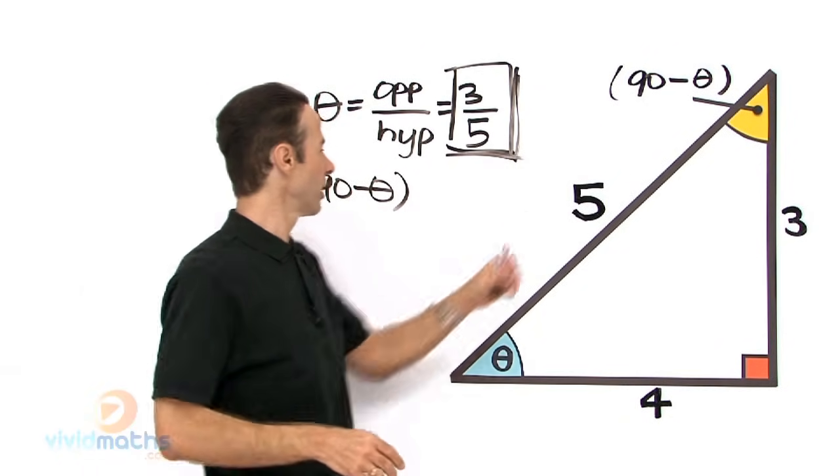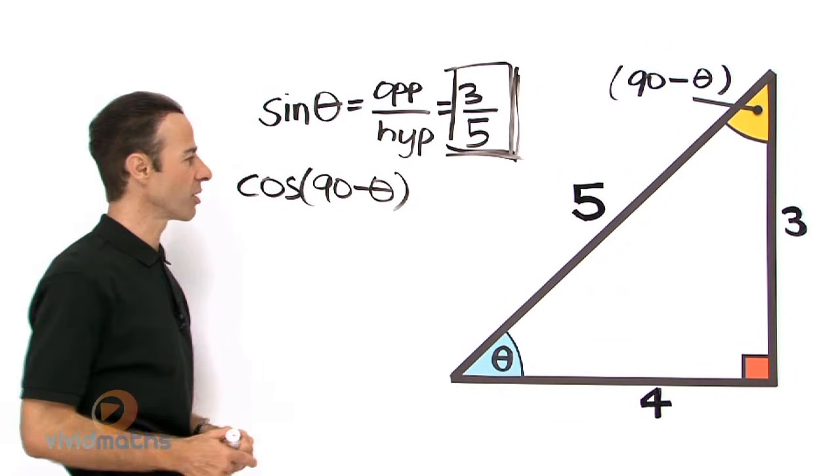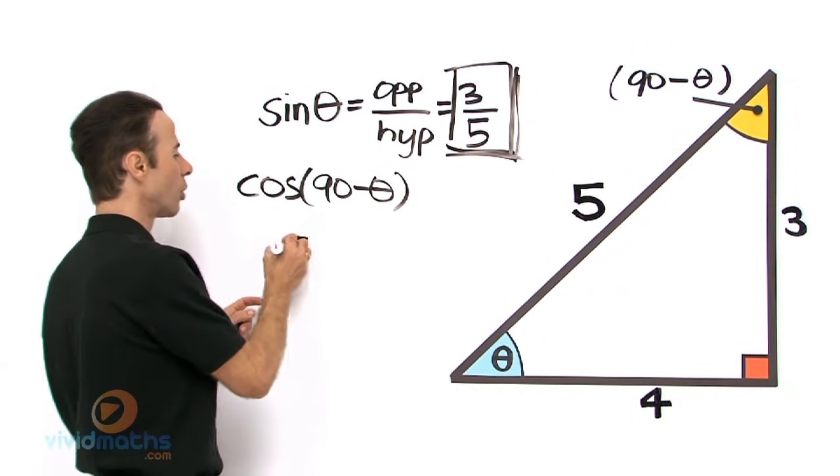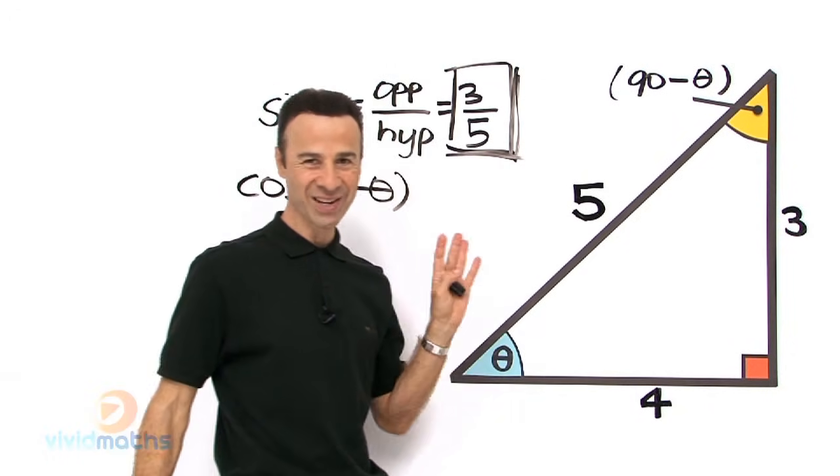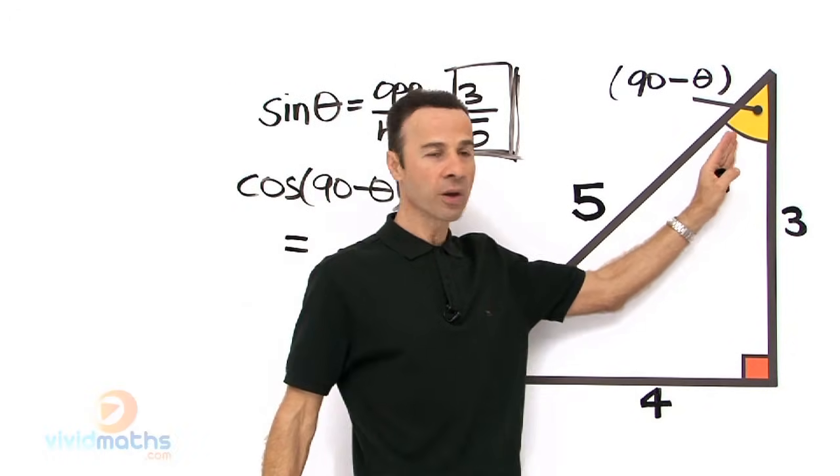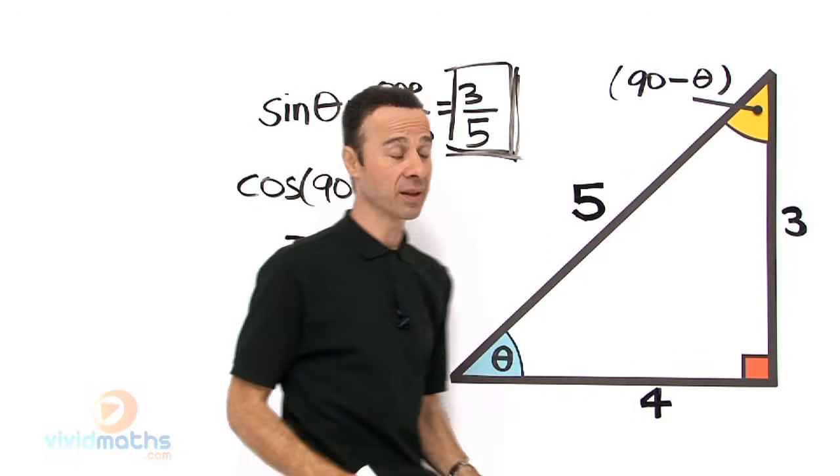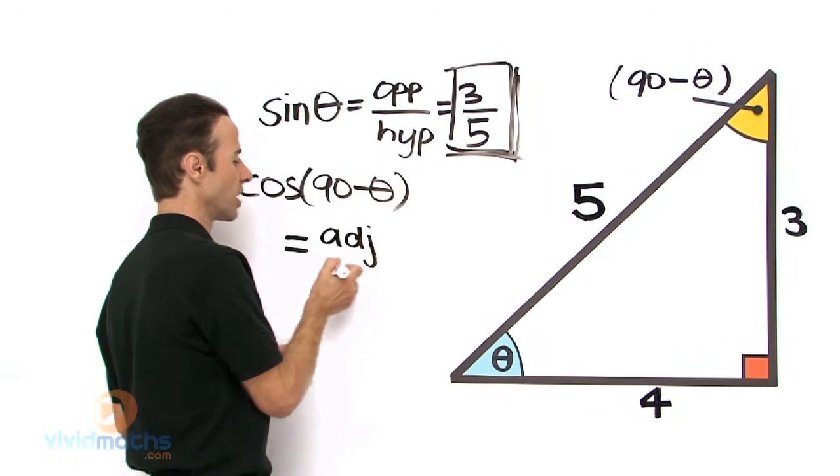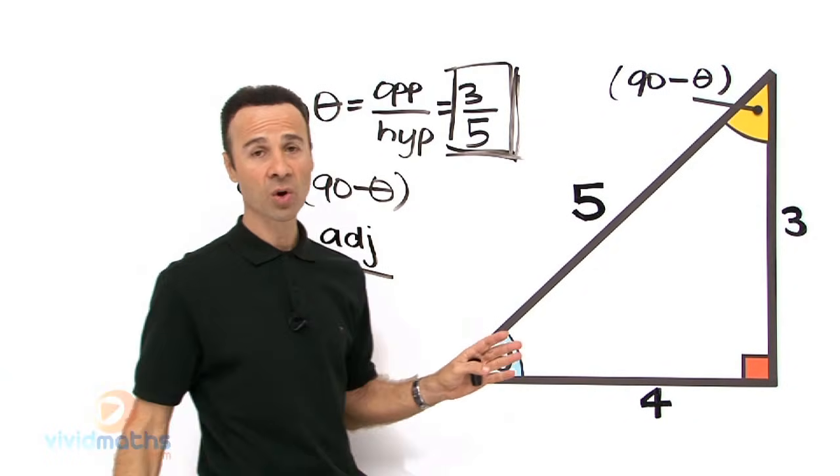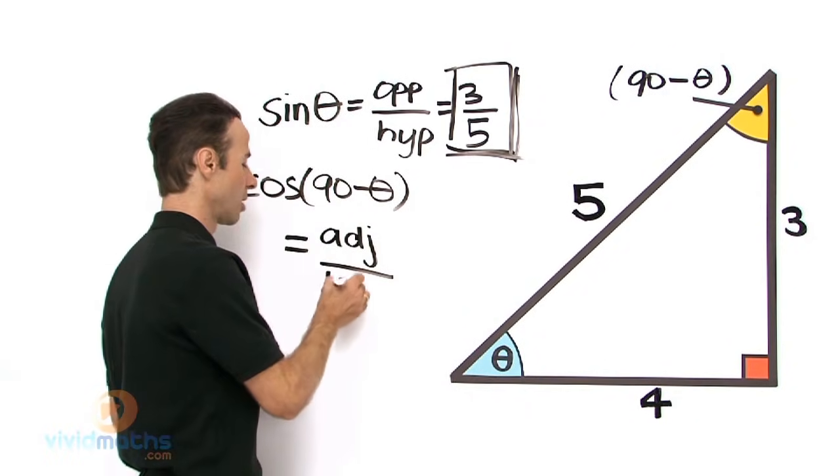So if that is 90-theta, we are looking for cos(90-theta). I wonder what that is going to equal. So first of all, what does cos equal? Cos equals adjacent, whatever is adjacent to the angle. So if we are looking for cos of this angle, we got adjacent which happens to be 3 again. So let us write down adjacent over hypotenuse.